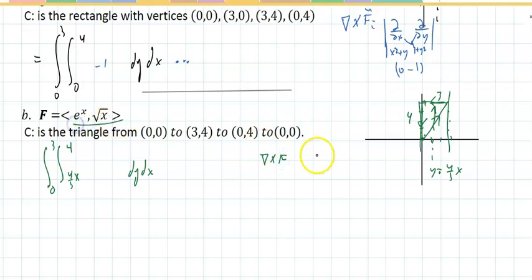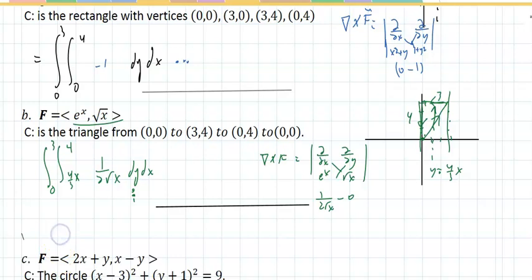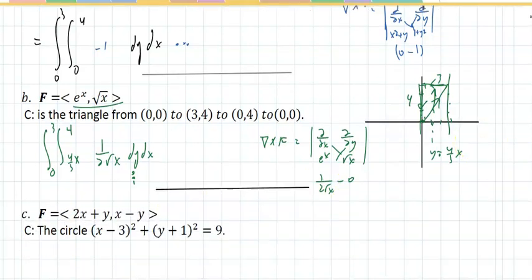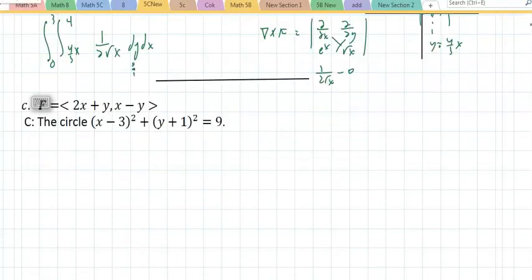And what's going to go in there? What is del crossed with F? They gave us F right there. So partial with respect to X, partial with respect to Y. And we're looking at e to the X radical X. That would be 1 over twice radical X minus 0. And there it is. So the idea is very simple. It's very efficient. Instead of what we did before and spending all of that time on it. The catch, it has to be closed. So if it's not closed, then Green's Theorem doesn't apply.